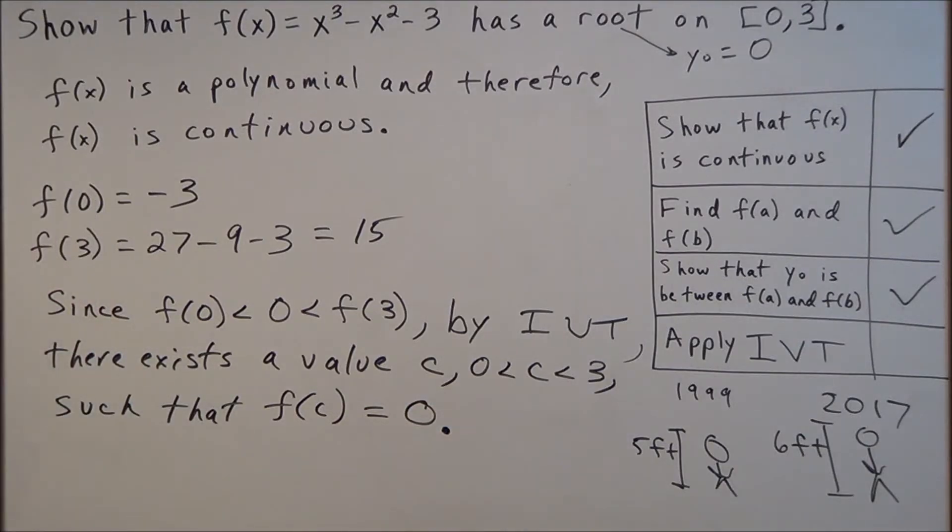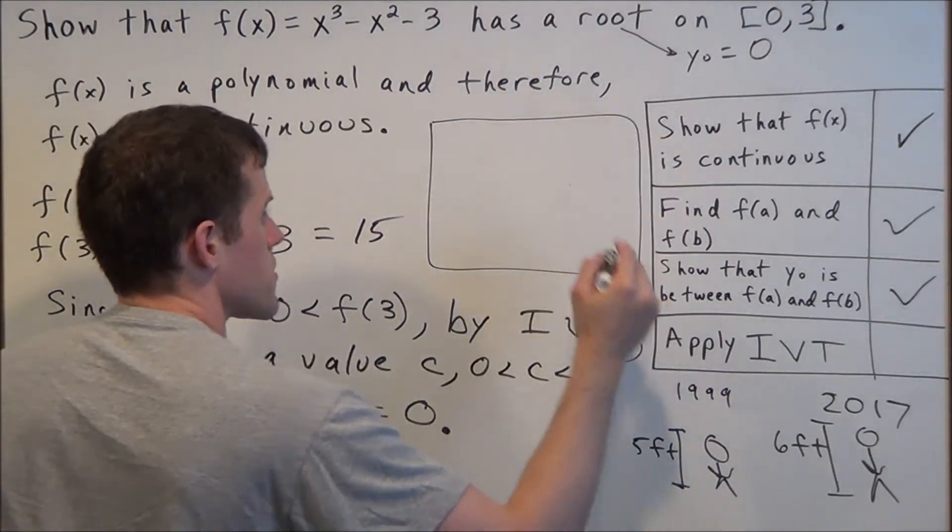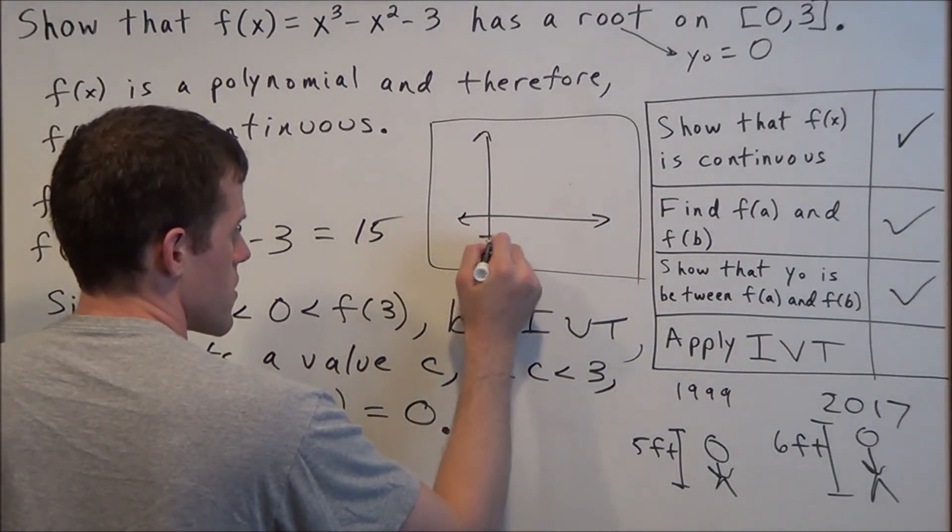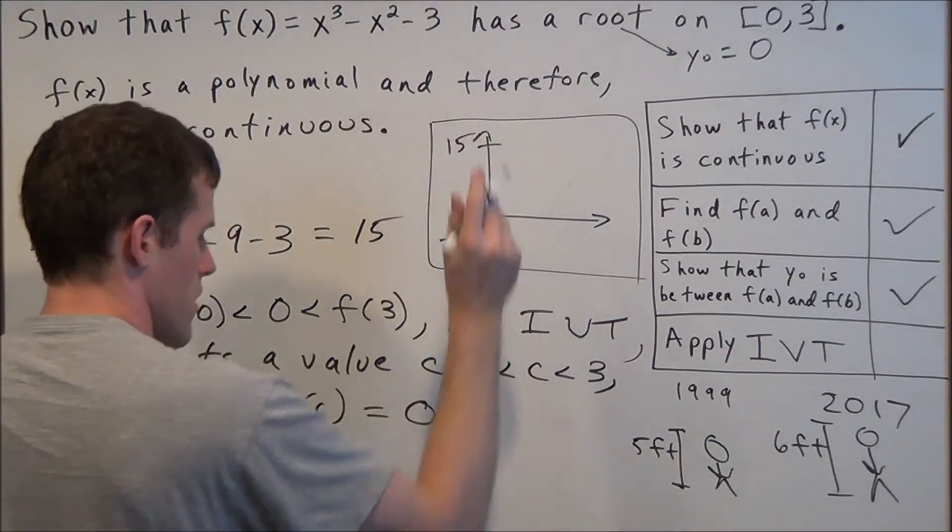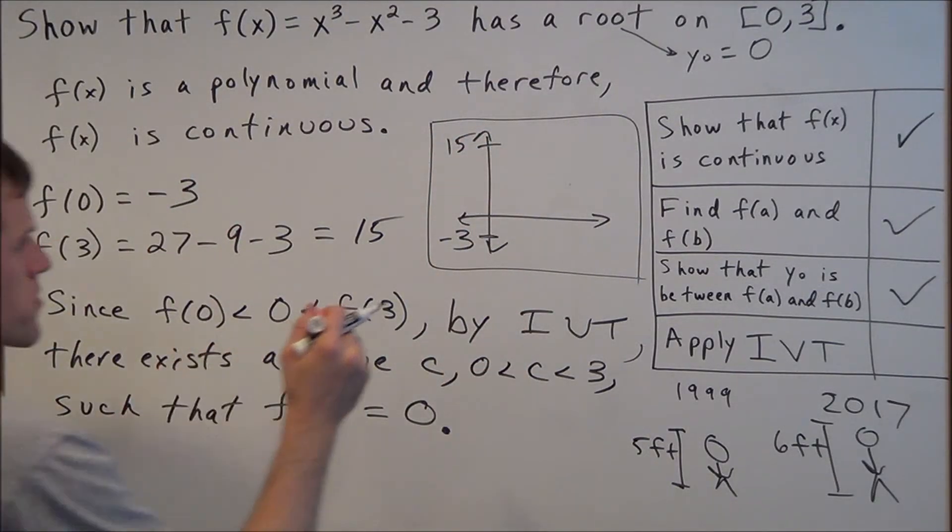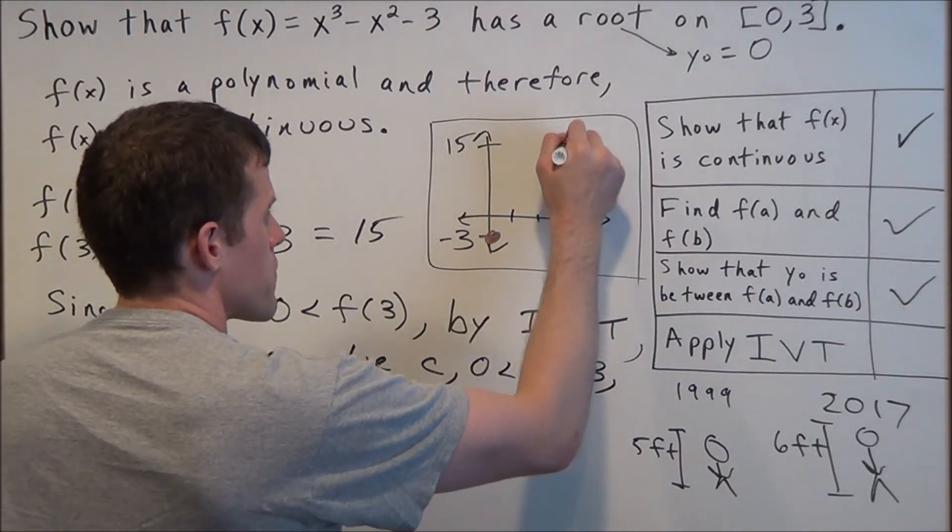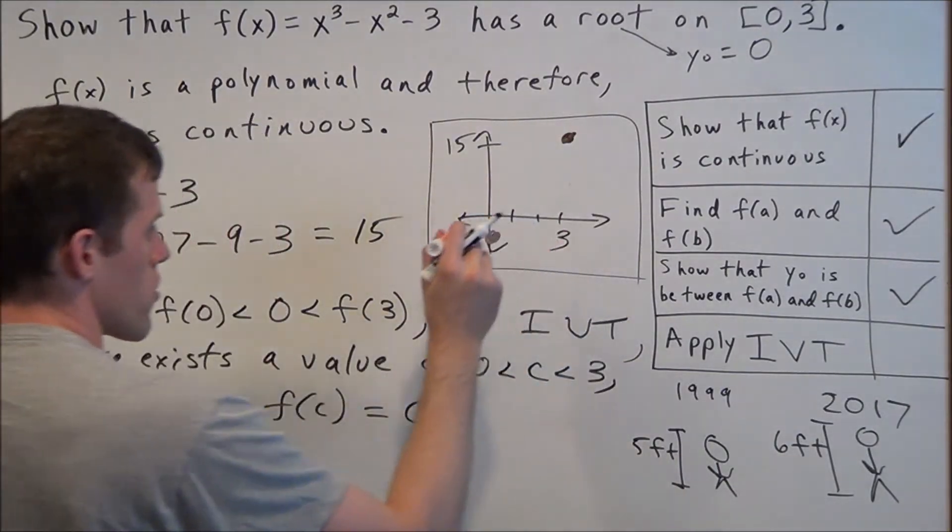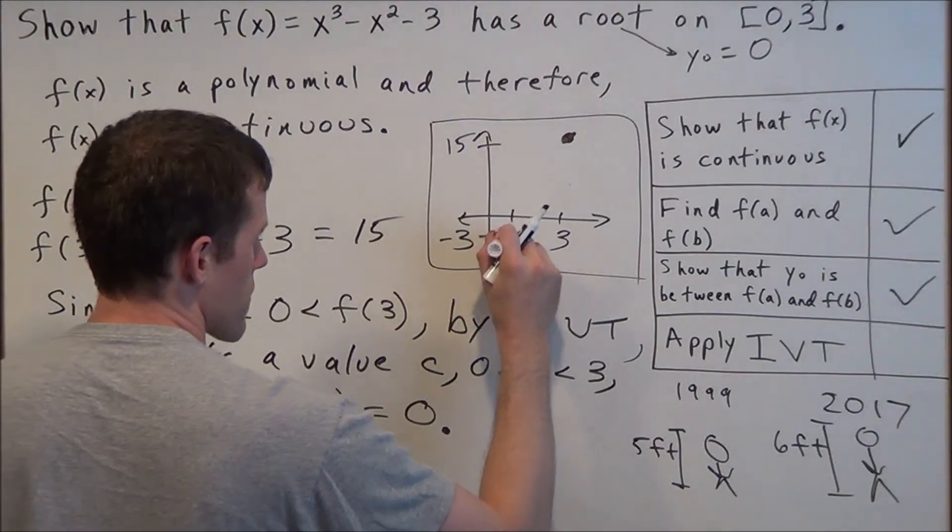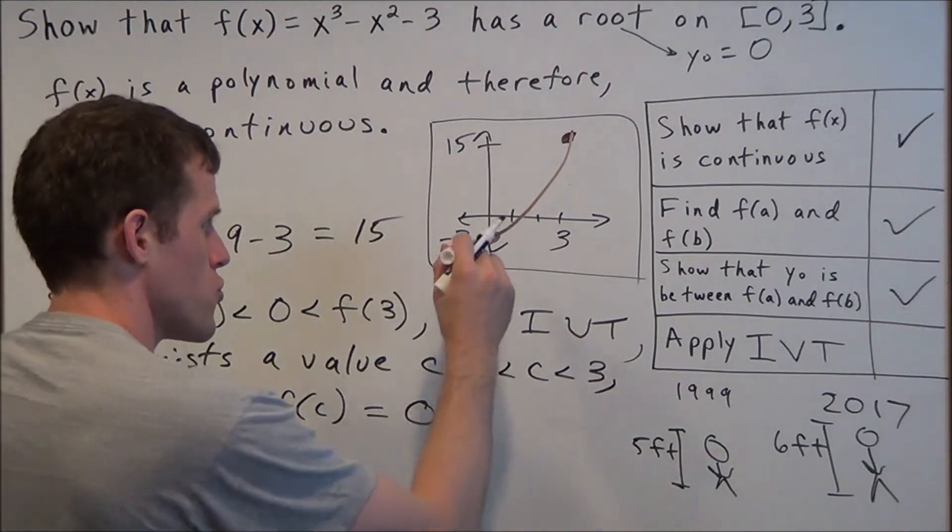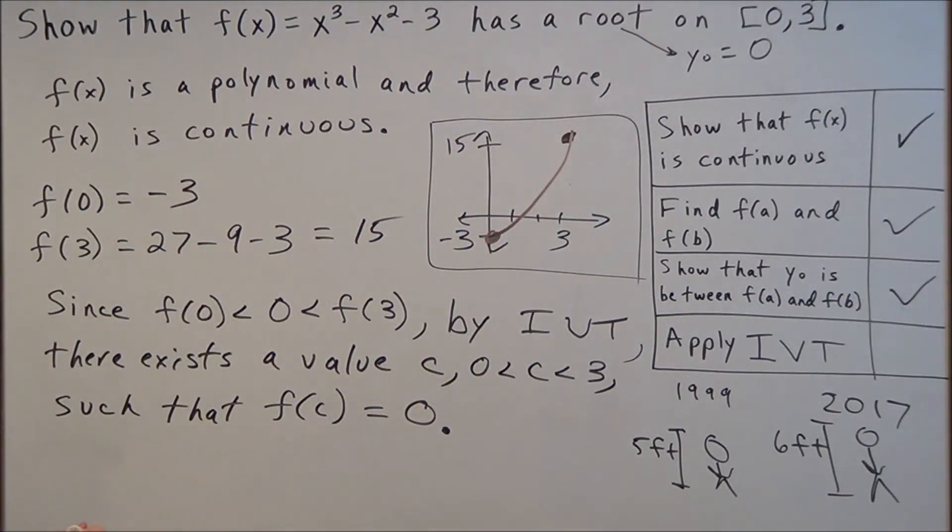We wrote it out verbally, but now let's look at it visually. We started with f(0) = -3 and f(3) = 15. Think about it: on our way from f(0) to f(3), we have to pass through the x-axis because this is a continuous function—I have to draw it without lifting my marker off the board. That's a visual reason why we have a root between 0 and 3, but if we want to write it out formally, we do it this way.